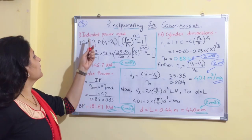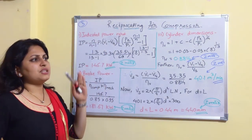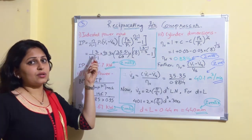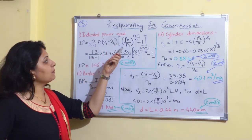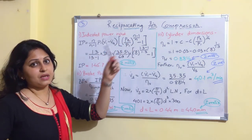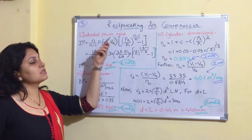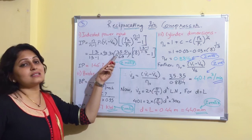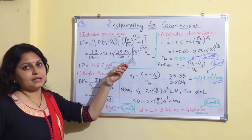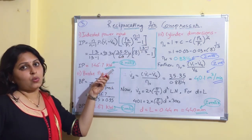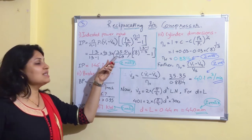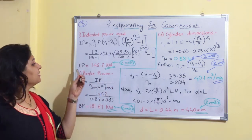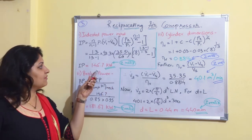Now let us find indicated power. With clearance included, the formula is: IP = [n/(n−1)] · P1 · (V1−V4) · [(P2/P1)^((n−1)/n) − 1]. Substituting (V1−V4) = 35.5/60 m³/s and the remaining values, we get IP = 146.7 kW.